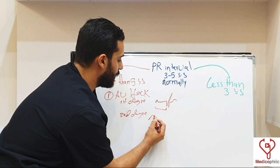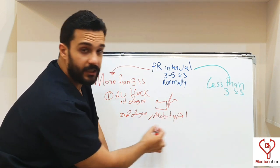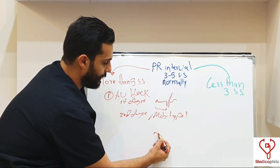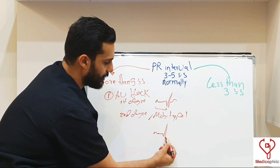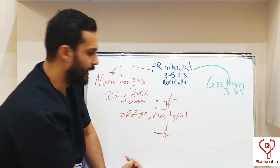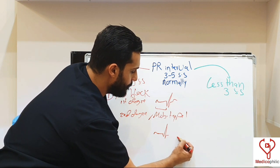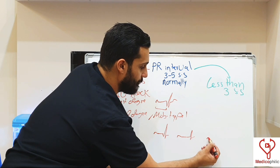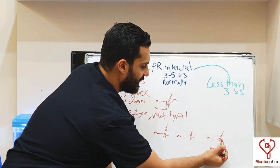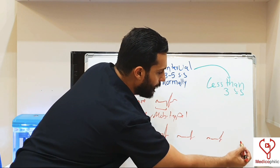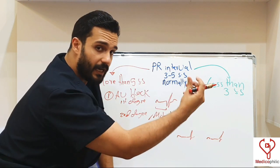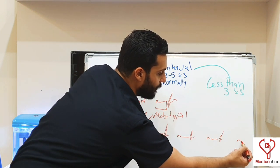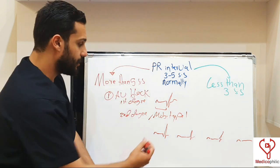The second degree AV block has 2 subtypes. Mobitz type 1, or Wenckebach phenomenon. Here, the PR interval prolongation is progressive. For example, you see one PR interval of 4 small squares, then the next becomes 5, then 6, then 7 small squares. Then you have a dropping of the QRS from the P wave — one P wave without any QRS. This is called Wenckebach phenomenon.